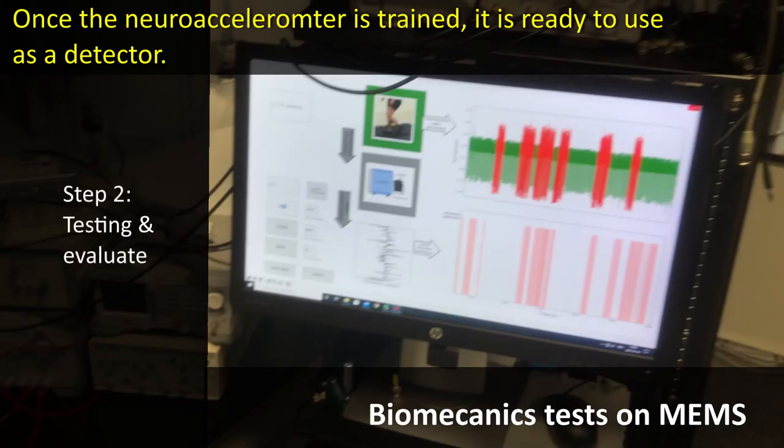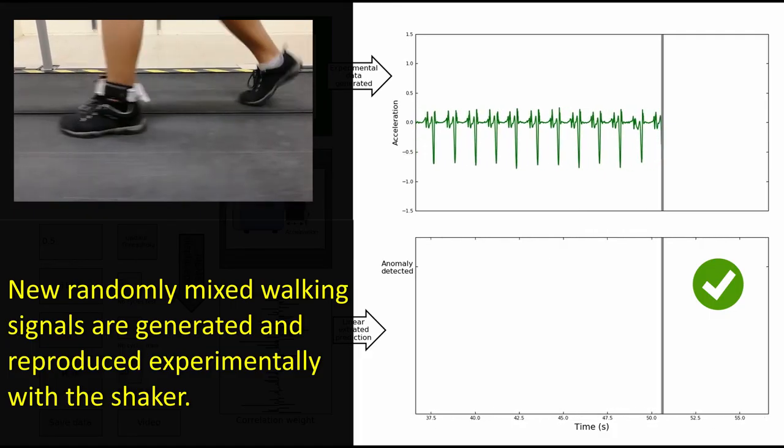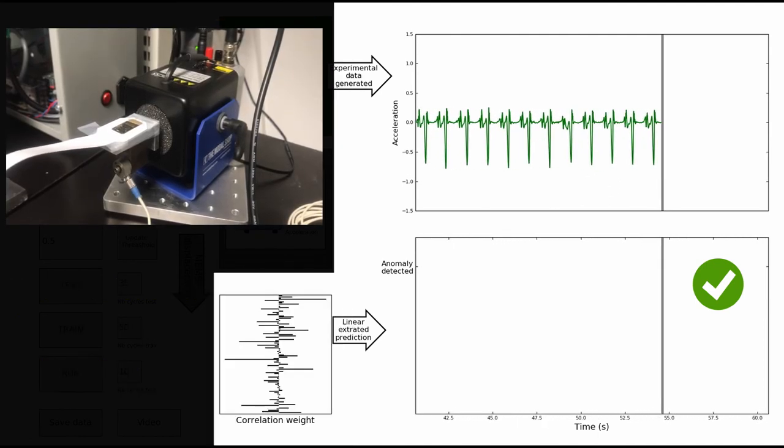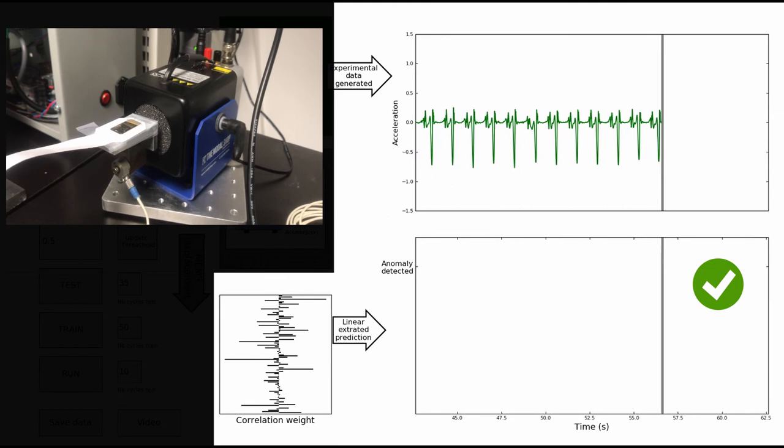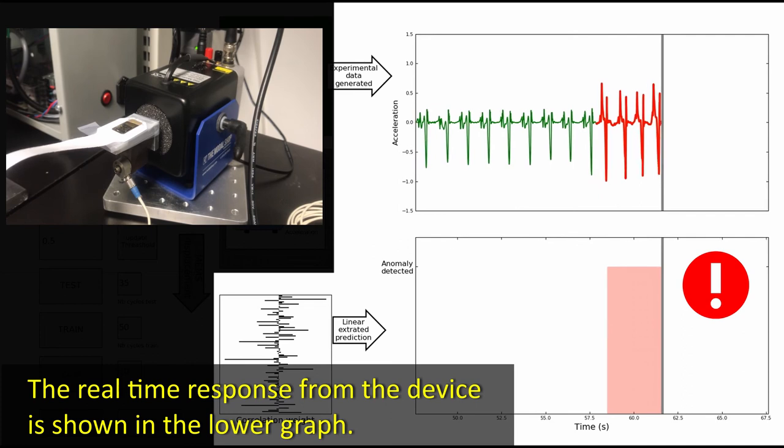Once the neuroaccelerometer is trained, it is ready to use as detector. New randomly mixed walking signals are generated and reproduced experimentally with the shaker. The real-time response from the device is shown in the lower graph.